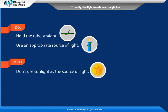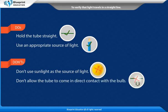Don'ts: Don't use sunlight as the source of light. Don't allow the tube to come in direct contact with the bulb.